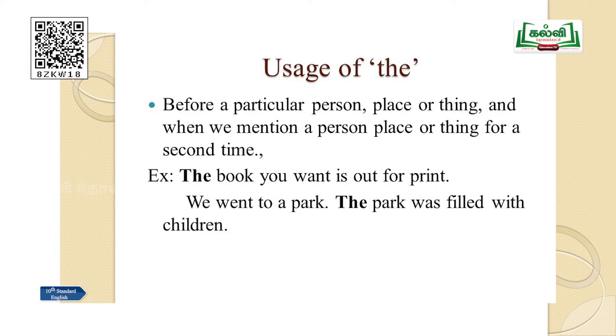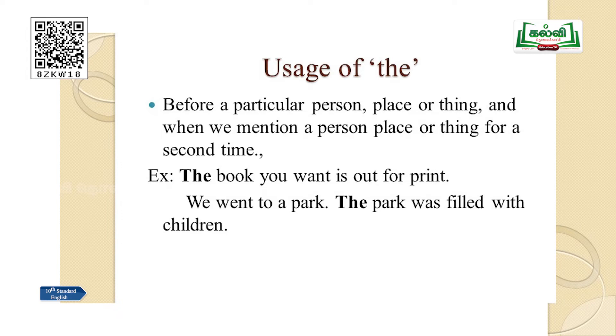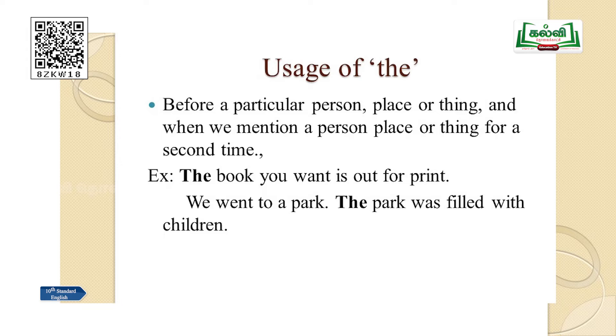Now let's look at the usage of 'the'. 'A' and 'an' are indefinite articles because they talk about things, persons, or places in general. 'The' is a definite article because it refers to a particular person, place, or thing. We use 'the' before a particular person, place, or thing, and also when we mention a person, place, or thing for the second time. For example: 'The book you want is out of print' — both the speaker and listener know which specific book is being referred to.